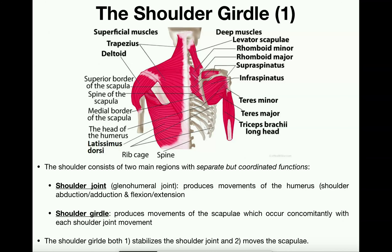When we talk about the shoulder, we have to discuss two separate regions. One is the shoulder joint itself, also called the glenohumeral joint. This name comes from the fact that it produces movements of the humerus, and refers to the joint where the humerus connects with the glenoid fossa — which is part of the scapula itself. The glenohumeral joint produces movements of the humerus.